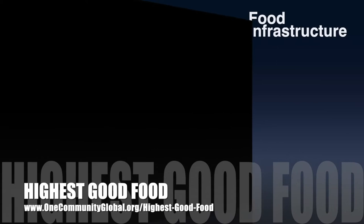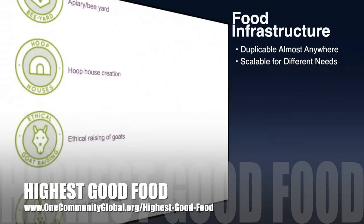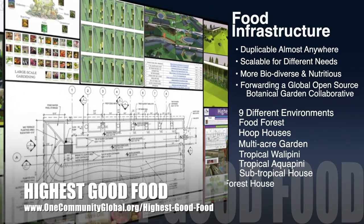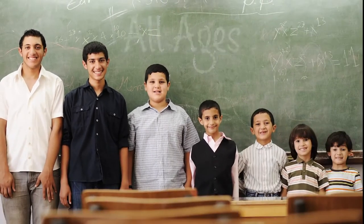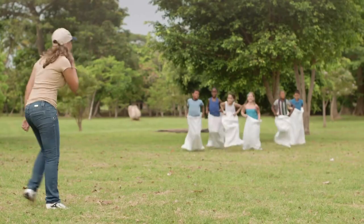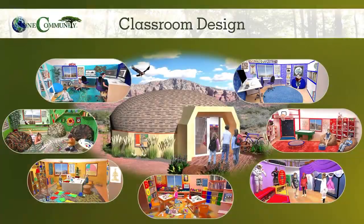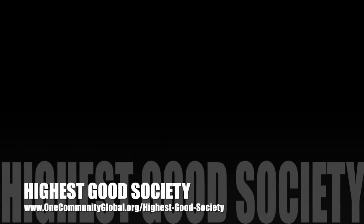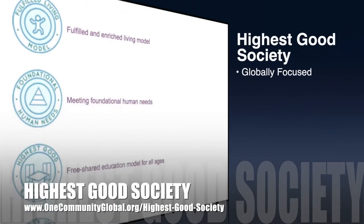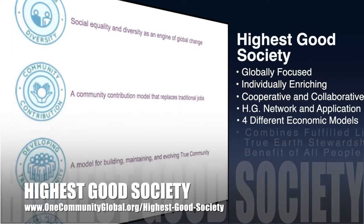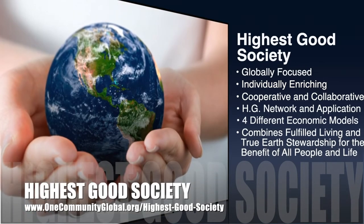One Community's approach to Highest Good Food is duplicable almost anywhere, scalable for different needs, more biodiverse and nutritious, part of forwarding a global open source botanical garden collaborative, and includes nine different free shared and duplicable growing environments. The Highest Good Education component is complete and ready to launch once on the property — it is designed for all age groups, adaptable to any schooling environment, inspiring and fun for all participants, and includes national standards, all subjects, lesson plans, teaching strategies, learning strategies and tools, classroom design, and more. The One Community approach to Highest Good Society is globally focused, individually enriching, cooperative and collaborative, includes a Highest Good network and application, four different economic models, and combines fulfilled living and true earth stewardship for the benefit of all people and all life on this planet.